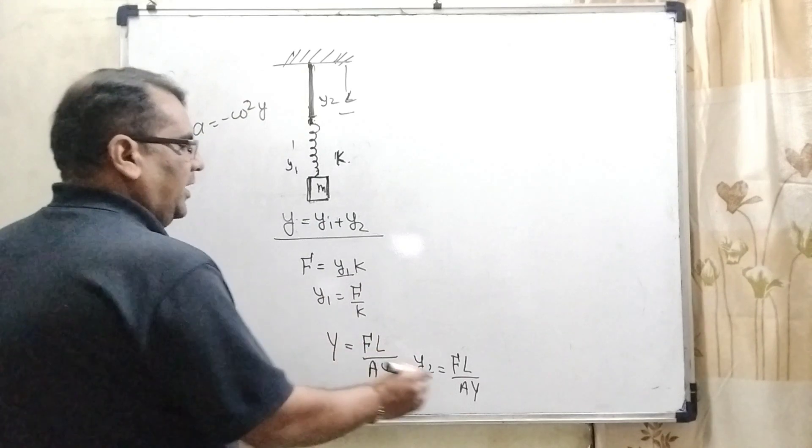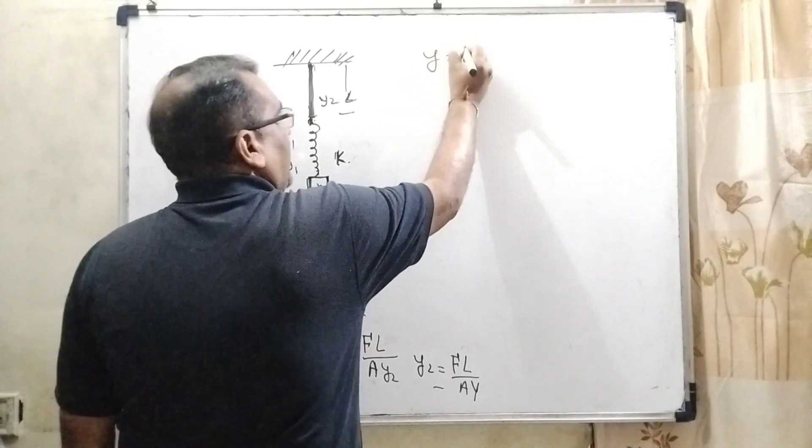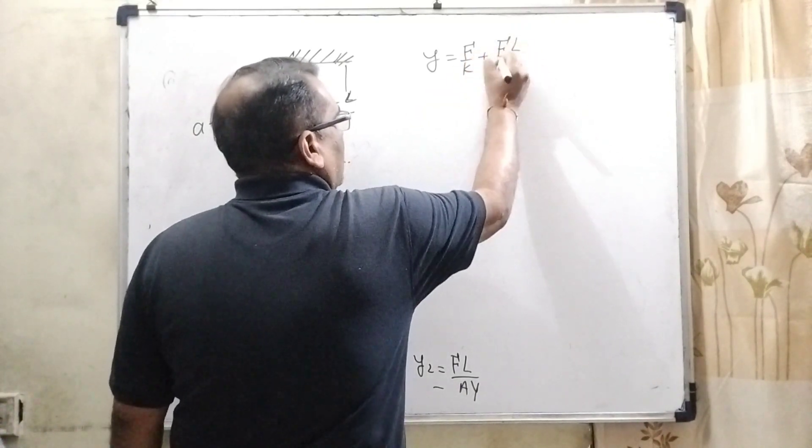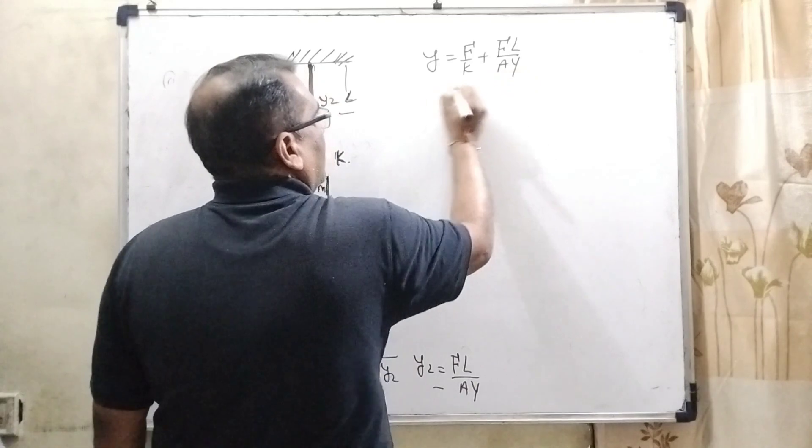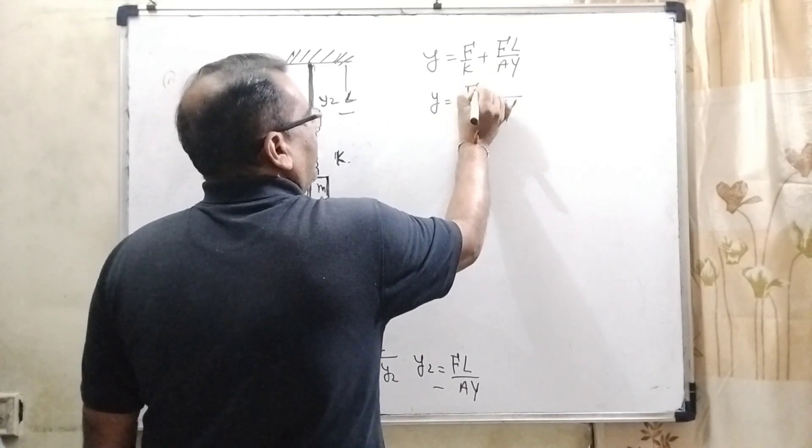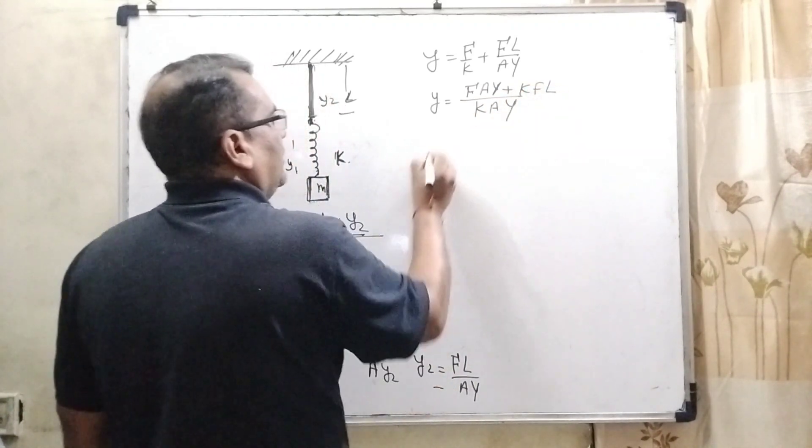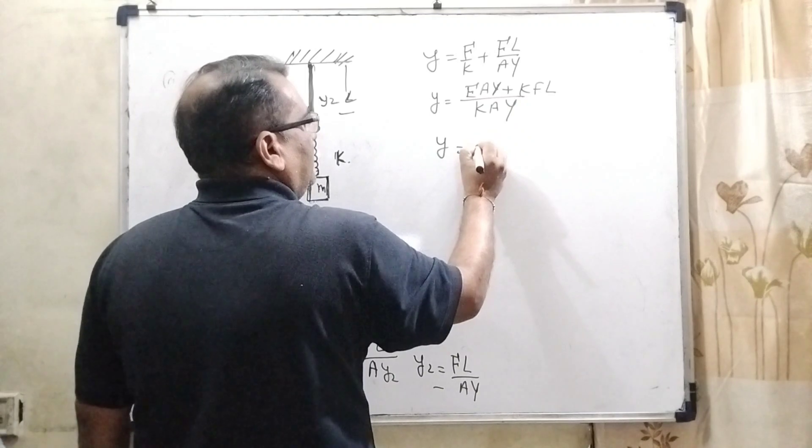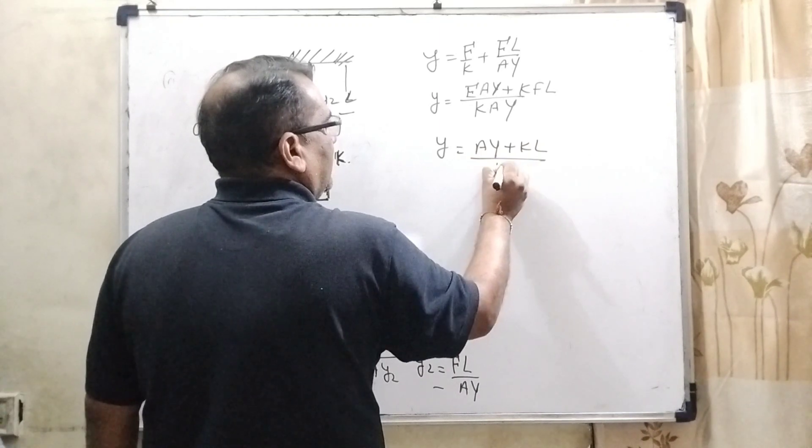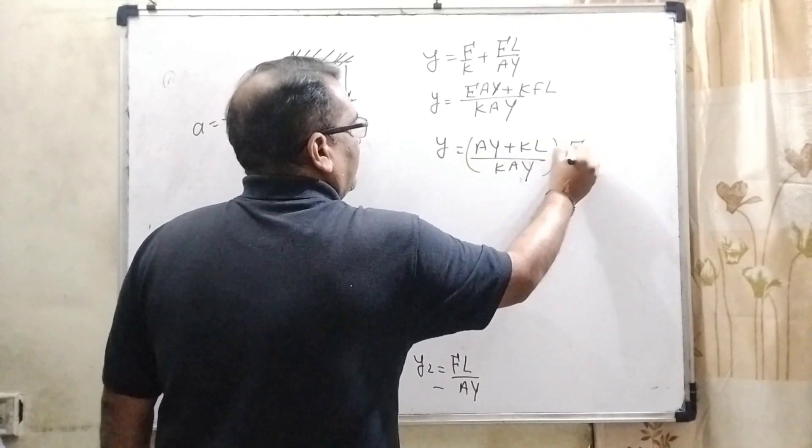Now put the value of y1 and y2 in this equation. Then y equals F by k plus FL upon AY. Taking the LCM kAY, we get FAY plus FkL. Taking F common, we get F times (AY plus kL) upon kAY.